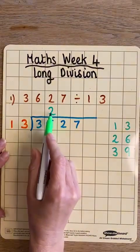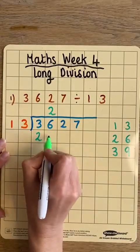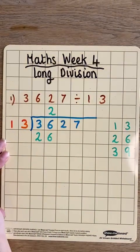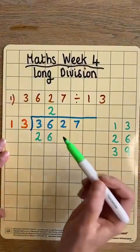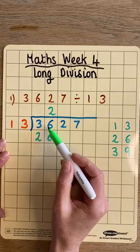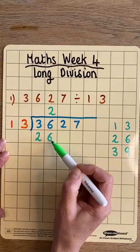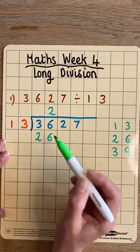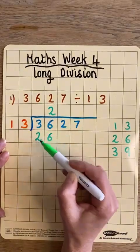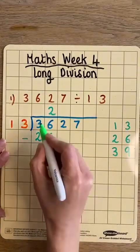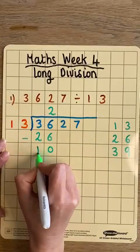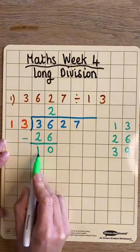2 thirteens is 26, so the number 26 goes underneath 36, and we use that to find the remainder to continue the sum. 36 take away 26 is 10 — you can also use a column subtraction: 6 take away 6 is 0, 3 take away 2 is 1 — so my remainder is 10.